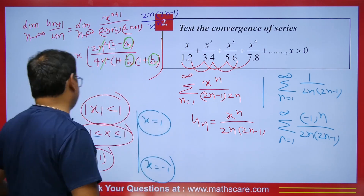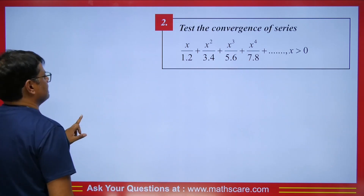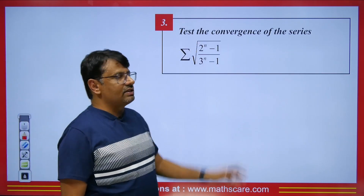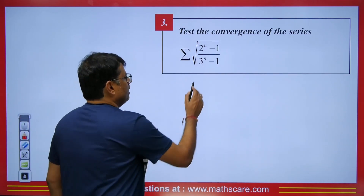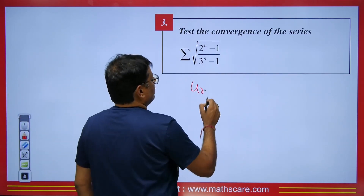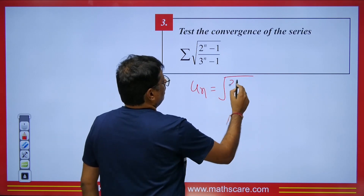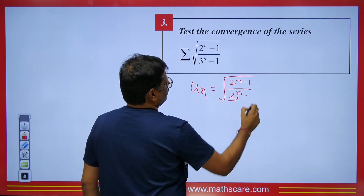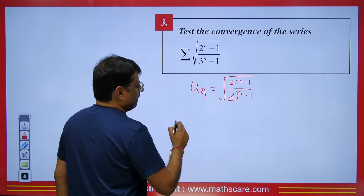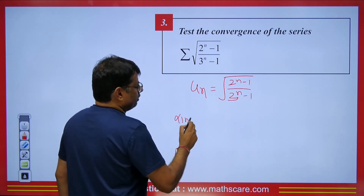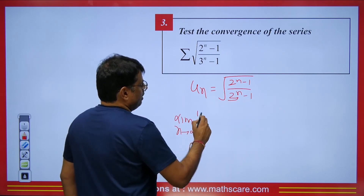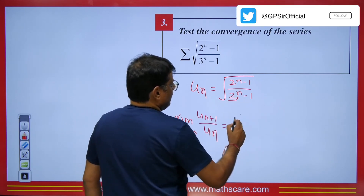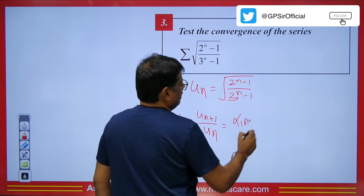So we can do this very easily using this method. Next, test the convergence of the series with nth term u_n = √[(2^n - 1)/(3^n - 1)]. If we apply the ratio test, we compute limit n → ∞ of u_{n+1}/u_n.